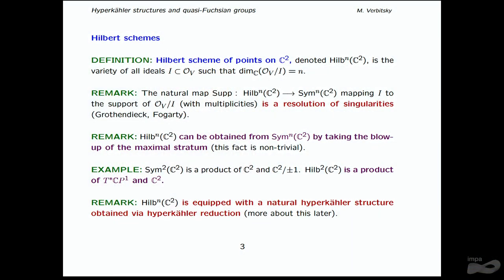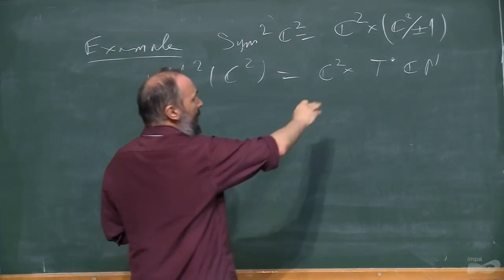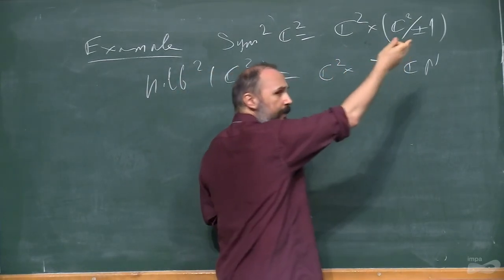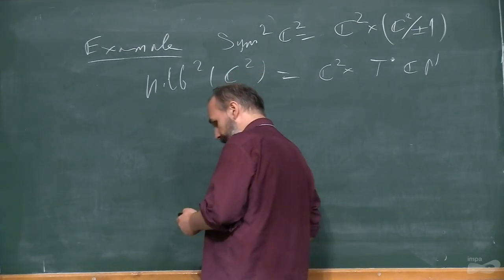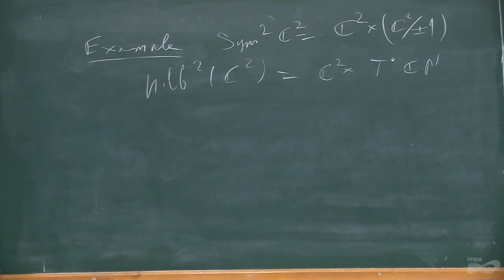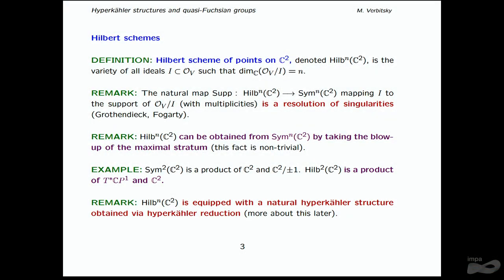The whole thing is hyperkähler, but I'm not going to tell you that now — I'm going to tell you about the higher Teichmüller spaces. In fact, you can obtain the Hilbert scheme for each N as a single blowup. Here it's sort of clear: you have this singular stratum, which is the double point of ℂ², and you blow it up to obtain this. But the same is true for higher N as well.